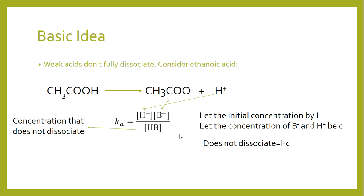Therefore on the bottom, we can say that the amount that does not dissociate is going to be the initial concentration minus C. So we can put that onto the denominator, and when we substitute all of this in, we get C times C on the top.